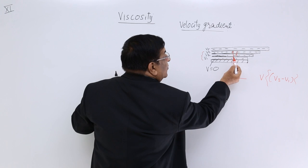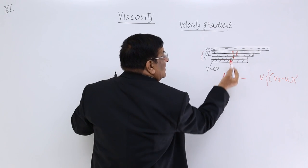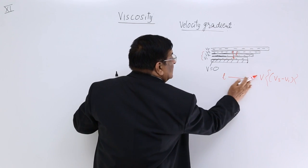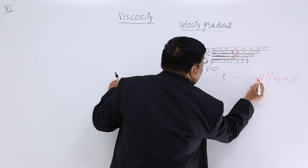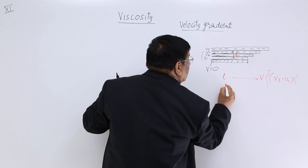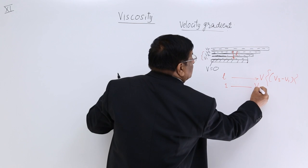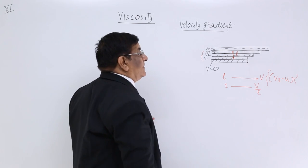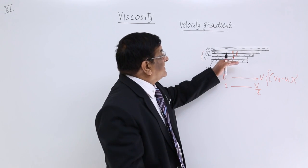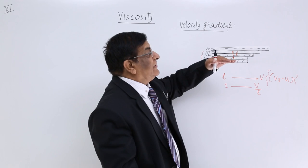If by going up by L length, the velocity has increased by amount V, then going up by 1 unit, how much will it increase? V upon L.